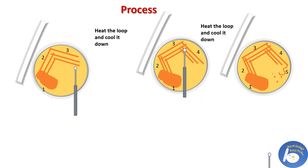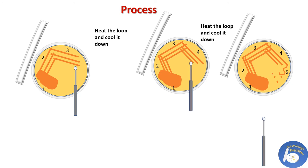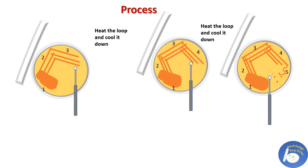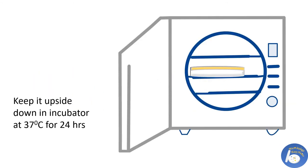Repeat the same process. For the last step, fill the remaining area of the plate with a zigzag motion and make three to four separate dots. In this process, each time the loop carries fewer and fewer bacteria until it gathers just a single bacterial cell that can grow into a colony. Close the lid of the Petri dish and keep it upside down in the incubator at 37 degrees Celsius for 24 hours.